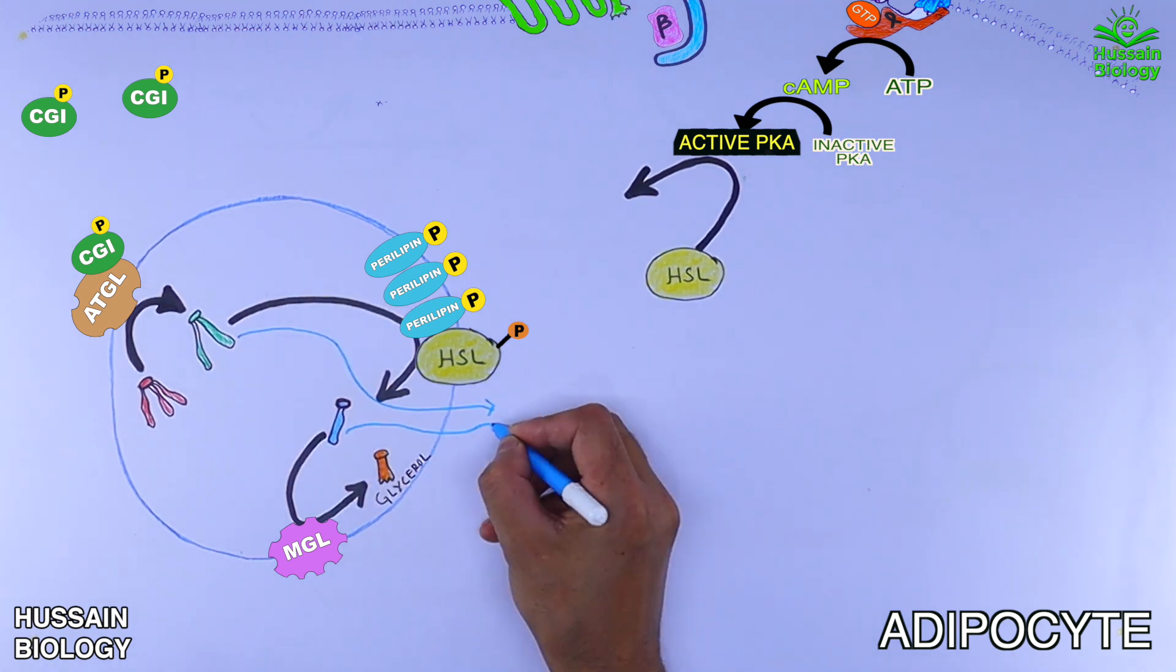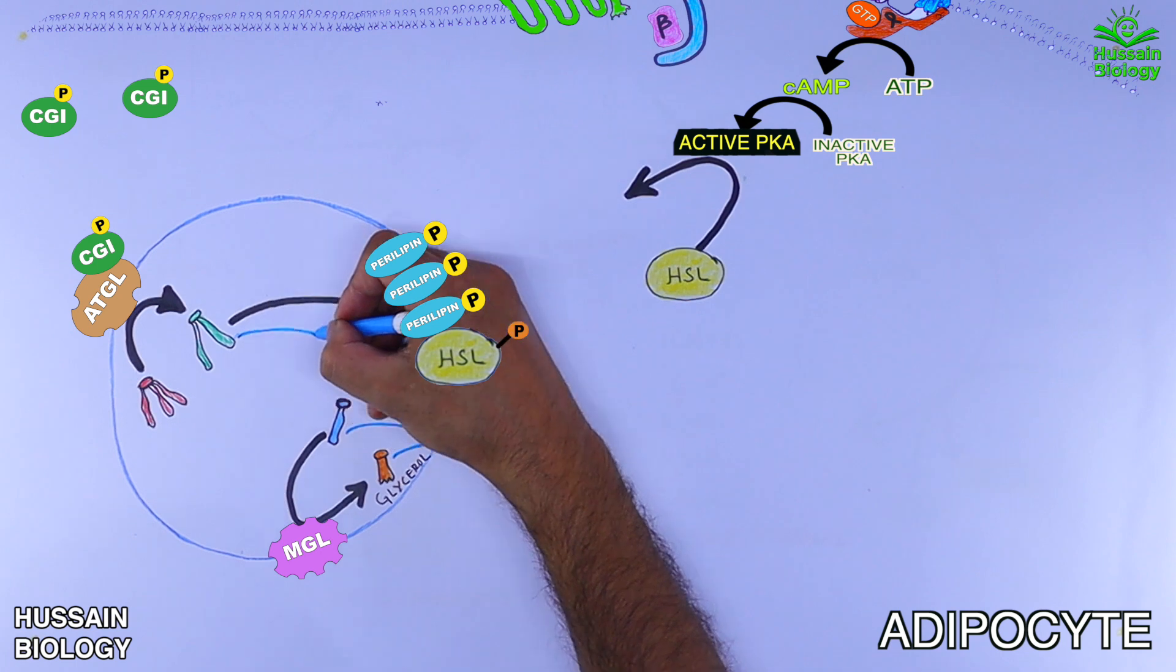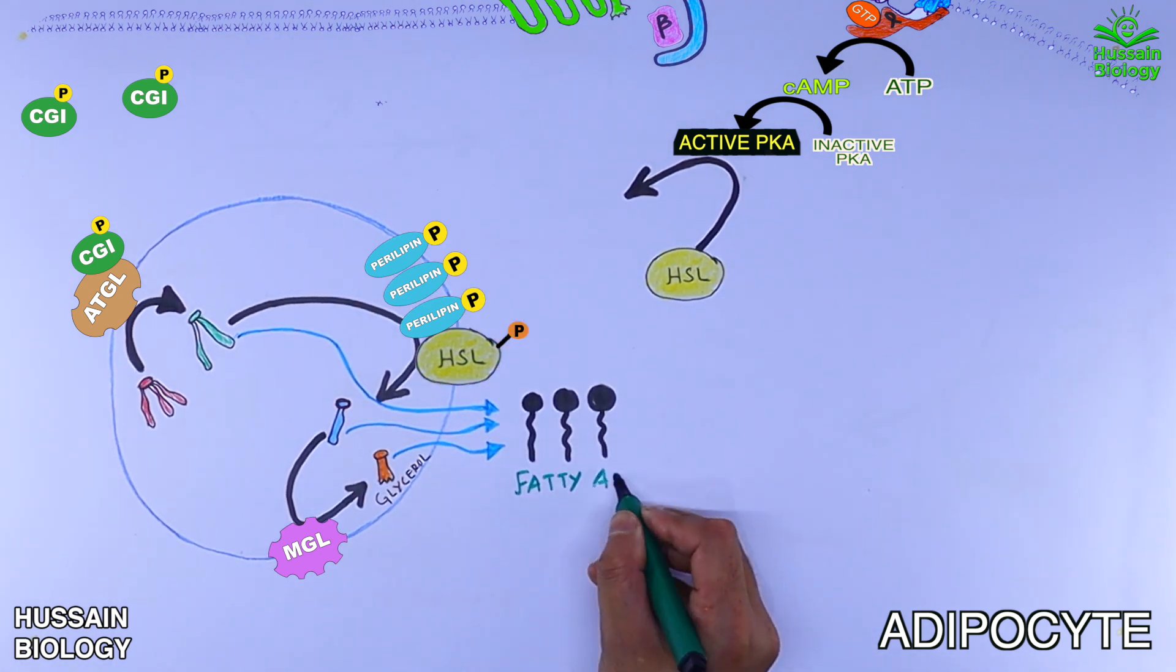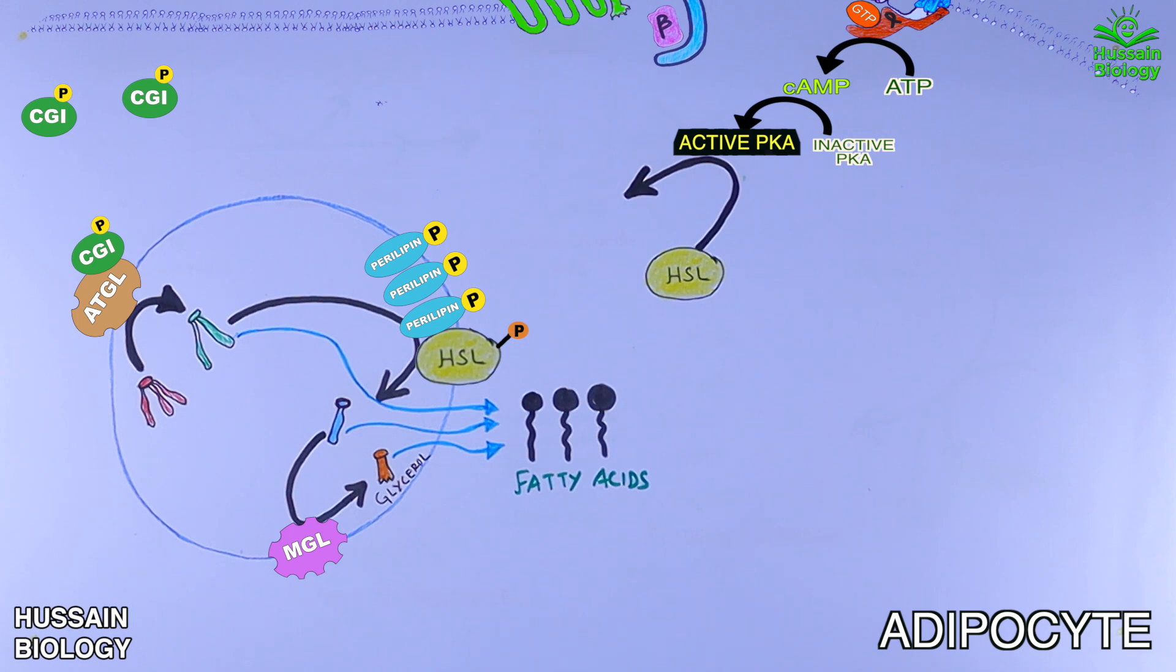And within the adipocytes these diacyl or monoacylglycerols can be converted into free fatty acids through hydrolysis also. So diacylglycerol or monoacylglycerol are either converted into glycerol or fatty acids through hydrolysis.